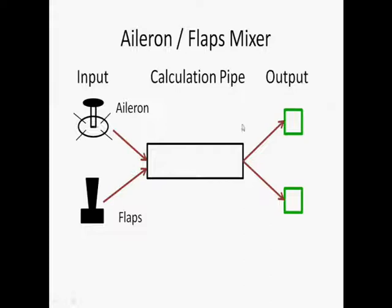So the structure is that you have this calculation pipe, then you have a joystick for the ailerons and a switch for the flaps, and in this calculation pipe these two signals are coupled with each other. And then they are forwarded to outputs which will be servos in the wings of the plane.